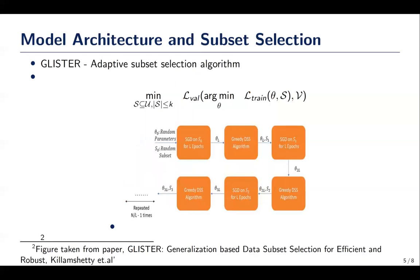For adaptive subset selection algorithm, we use the GLISTER algorithm from Killamsetty et al. In our method, we select a subset of training data based on the current parameters such that the loss on the validation set is minimized. In the inner loop, we optimize the model parameters by maximizing training log likelihood on the subset selected.